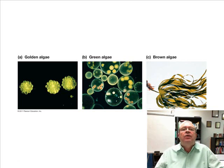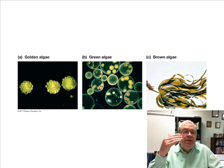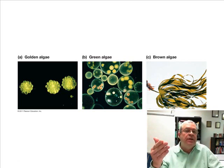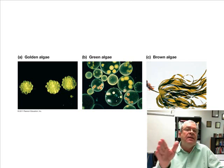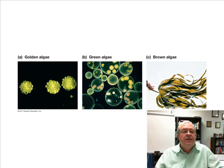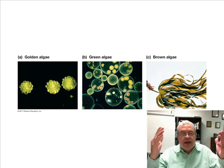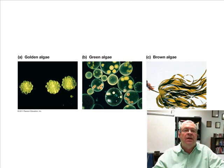We learned about protists a long time ago. We know how you get into Kingdom Protista. You've got to be eukaryotic — in other words, you've got to have a nucleus. And besides that, how do you get into Kingdom Protista? Not based on what you had, but based on what you don't have. You don't have the defining characteristics of plants, fungi, or animals. So if you have a nucleus and you're lacking the defining characteristics of plants, fungi, or animals, you end up in Kingdom Protista.